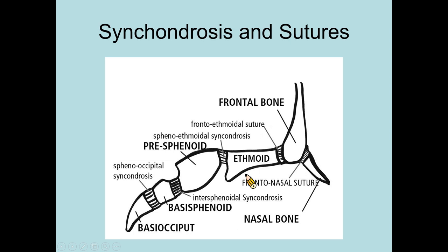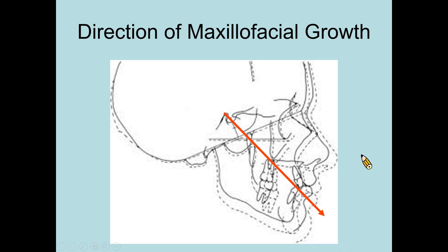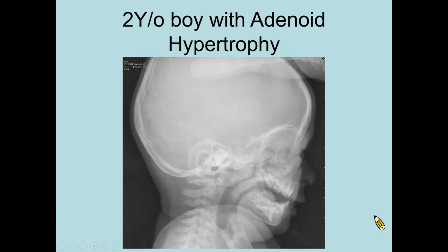We can see the synchondrosis at the skull base is immediately above the nasopharyngeal airway. If there is any early fusion of the synchondrosis, we may expect undergrowth of the skull base and narrowing of the upper airway. You can see different proportions and craniofacial growth after birth. The direction of maxillofacial growth is from posterior superior to anterior inferior. Even in homozygotic twins, because of differences in facial skeletal growth, their airway can be very different.